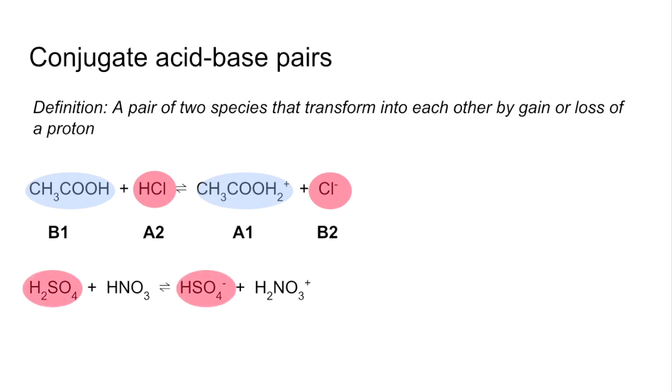The H₂SO₄ is losing a proton to become HSO₄⁻, and so therefore it's acting as an acid. We'll call it A1. So that must be B1.